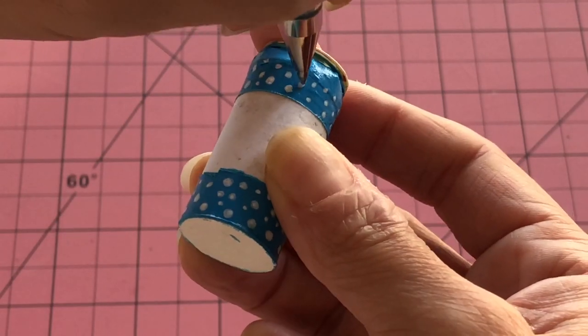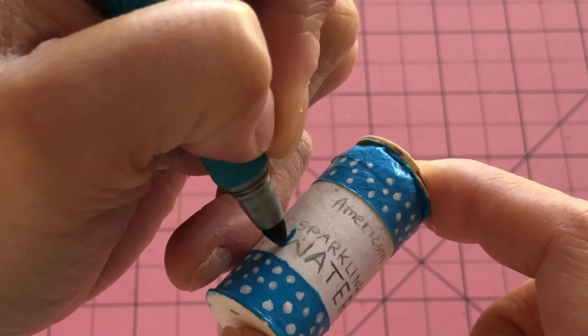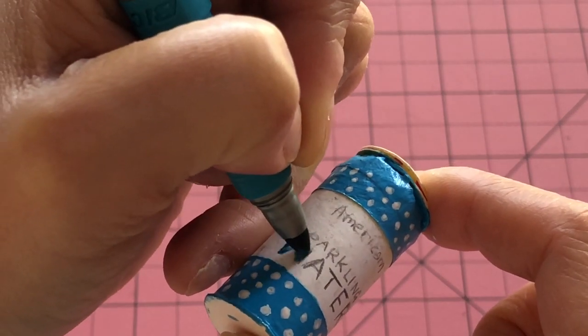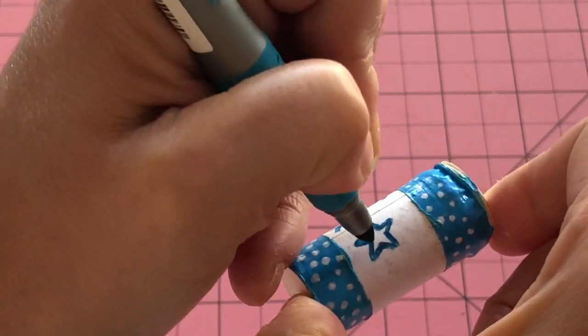When dry, peel off the tape and add white dots with a gel pen. Using a blue marker, add the words, an iconic AG star.